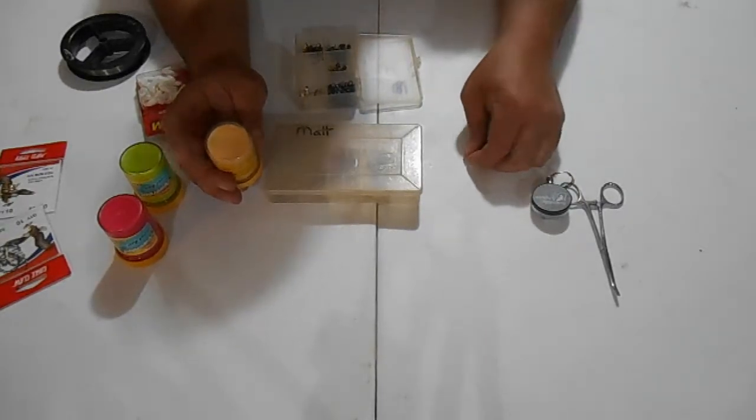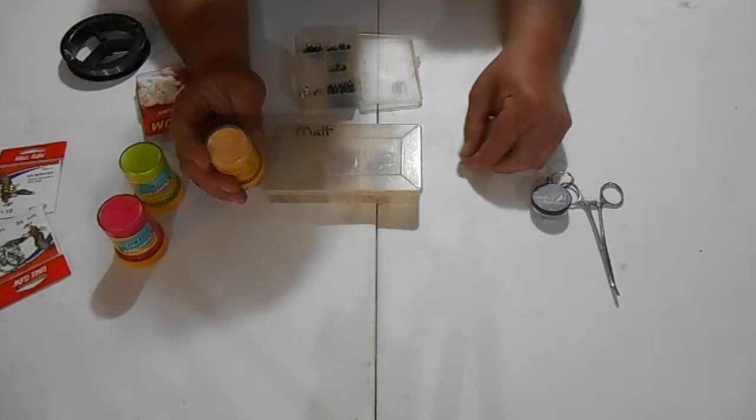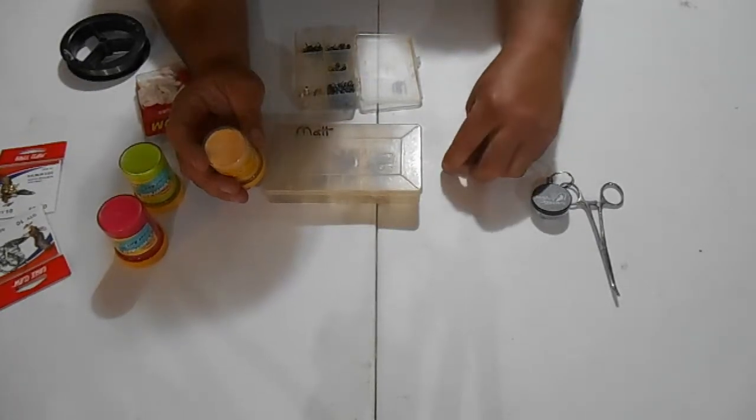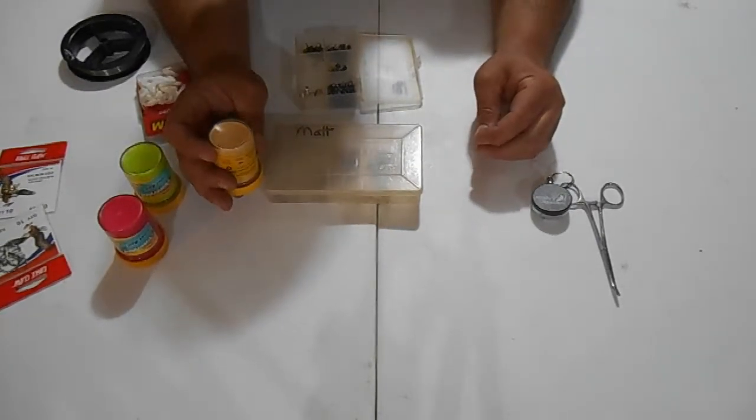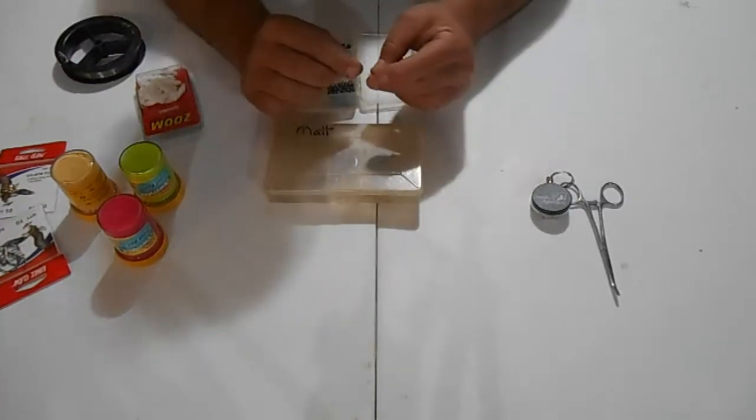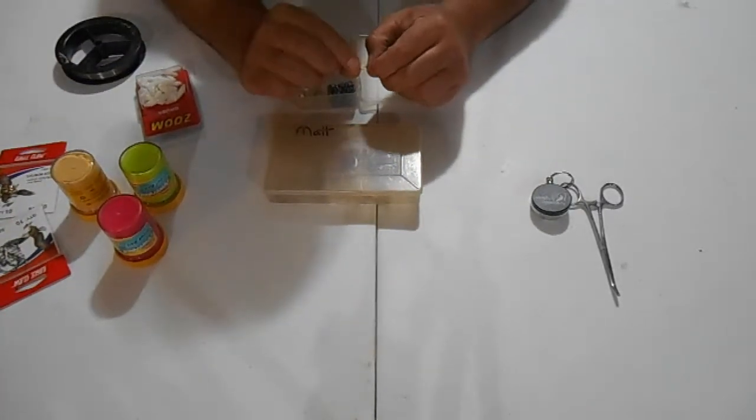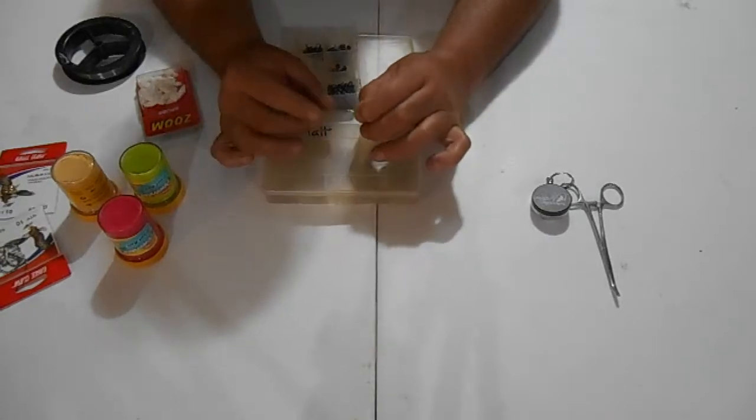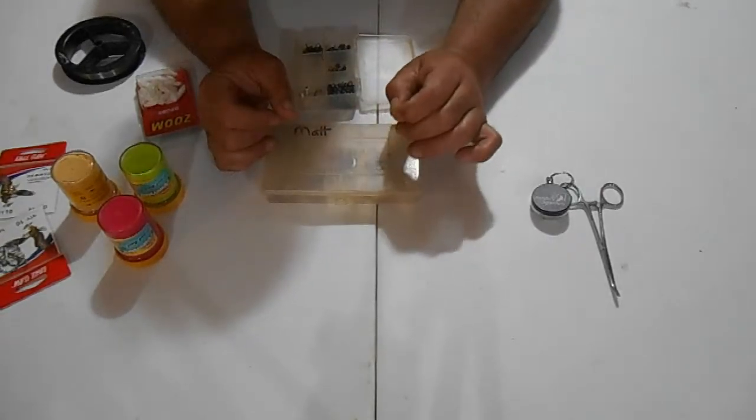But you want to put a piece of this dough on this hook about the size of a sweet pea. You don't want a great big dough ball like you'd be going carp fishing. So if you have a small hook you can cover that hook with that dough ball.